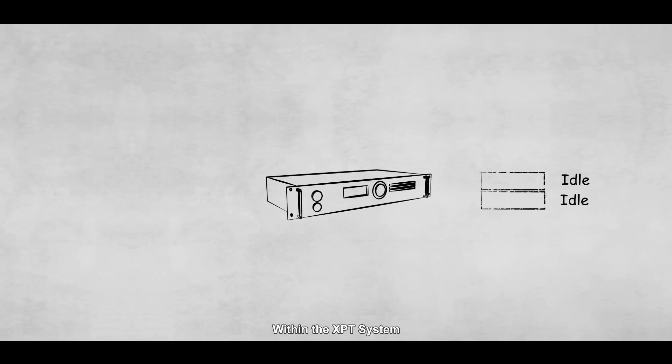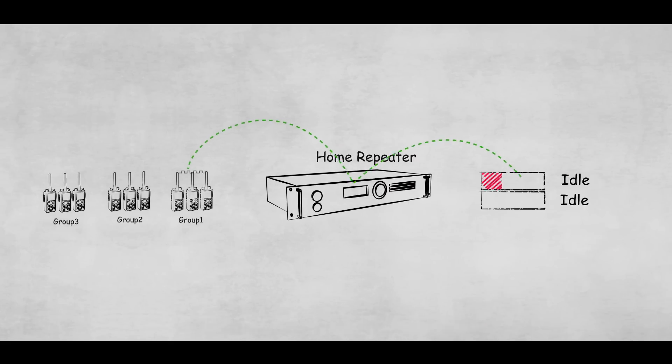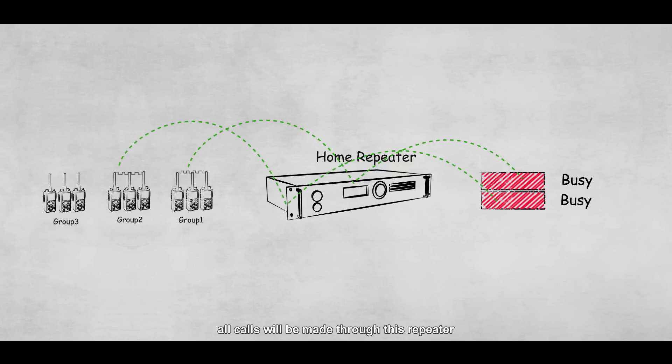Within the XPT system, groups of users will be allocated to a home repeater. When the home repeater is idle, all calls will be made through this repeater.